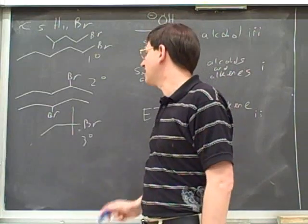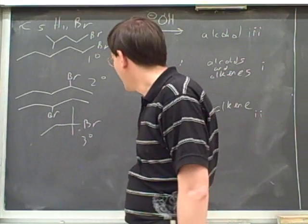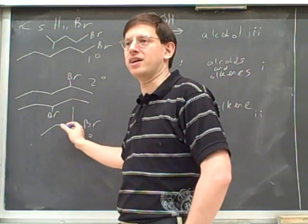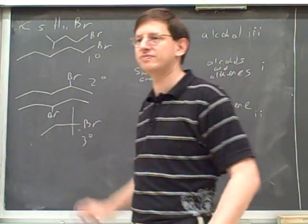Similarly, in this case, number one has to be a secondary, but it could be this secondary or this secondary. And there's probably some other secondaries we could draw too. I think this is the only possible tertiary. So we pretty much know for sure that Roman numeral two looks like this.